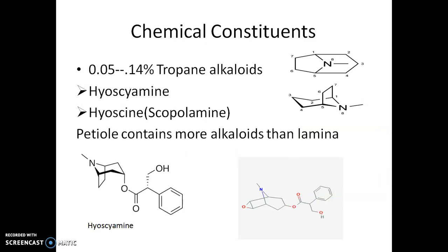The next section covers the chemical constituents. The major chemical constituent is alkaloid — specifically 0.05 to 0.14 percent tropane alkaloids. You can see the ring structure, which is an eight-membered ring — the tropane ring. Most solanaceous family plants, including belladonna, hyoscyamus, and datura, consist of this particular alkaloid.